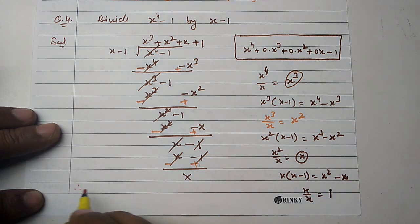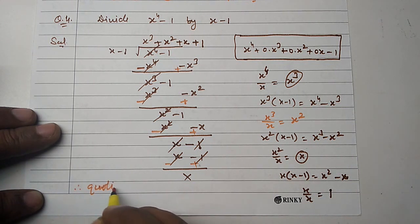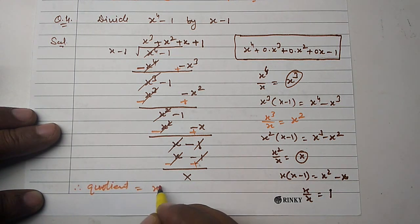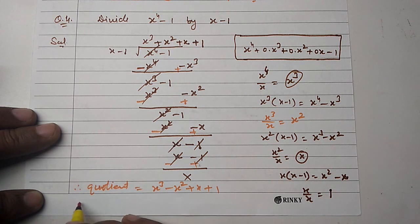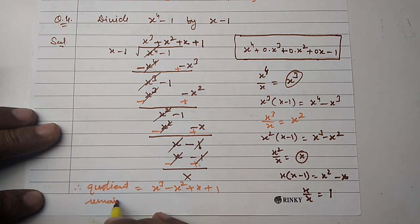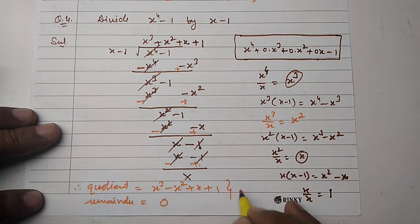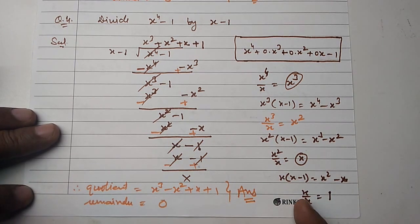Therefore quotient is x cubed plus x squared plus x plus 1 and remainder is equal to 0. This is the answer.